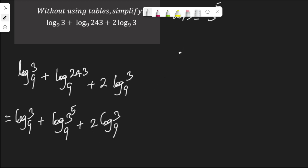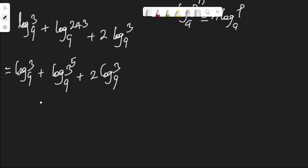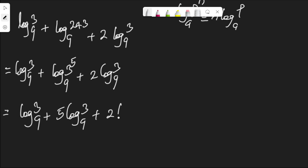There is a logarithm rule that says log p to the power of n to base a is n log p to base a. If I apply this rule to the middle term, the equation becomes log 3 to base 9 plus 5 log 3 to base 9 plus 2 log 3 to base 9.